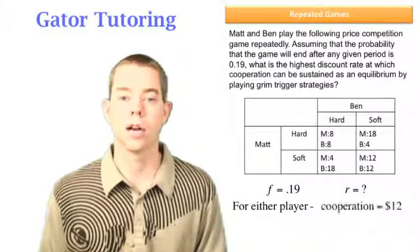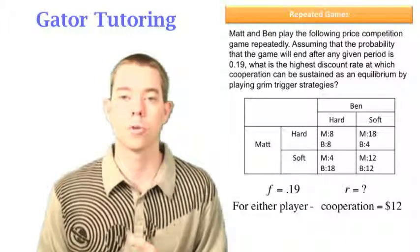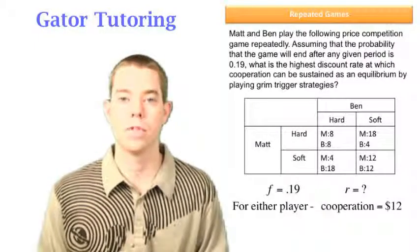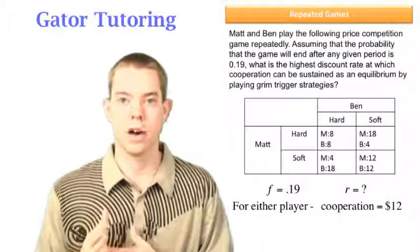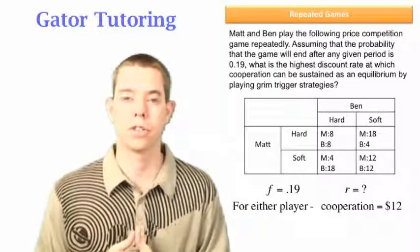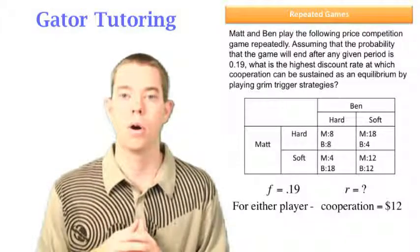For either player we can conclude that cooperation is equal to $12 per period. Let's take a look at how we found this. One way you can look at it is when both players play soft, it sounds like that's cooperating, they're not playing hard against each other, they're both playing soft, they both earn 12.